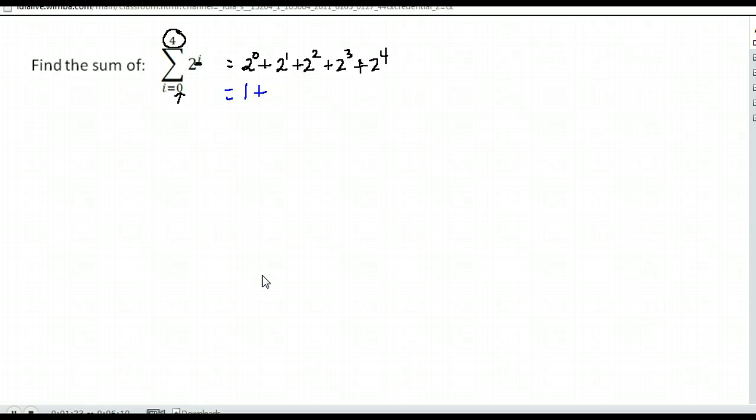Then we just find those values and add them together. Anything to the zero power is one, two to the first is two, two squared is four, two to the third is eight, and two to the fourth is sixteen. If we add all those together we get - sorry, I misread my handwriting - 31. That would be our sum. Again, the important parts of summation notation: the expression you're using, down here is the number you start with to plug in for your variable, and up here is the number you end with. Then you just add all of those terms together.